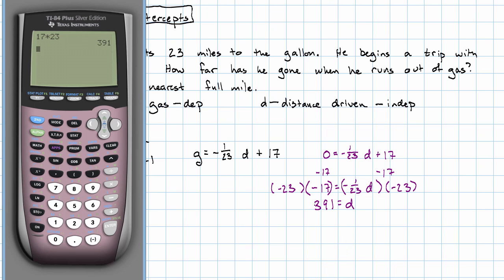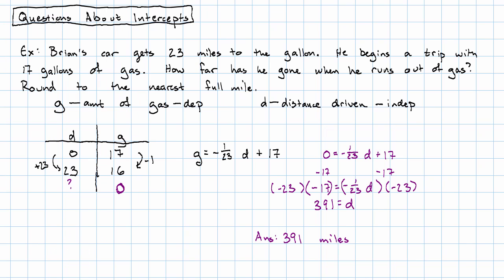How far has Brian gone? 391 miles. The trickiest part of this problem was recognizing that this, he runs out of gas, was telling us a value of g, and that will very often happen when the point that we're looking for is one of the intercepts, and not just any old point.